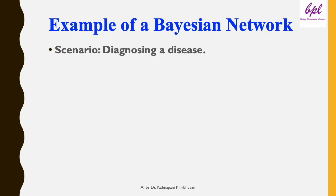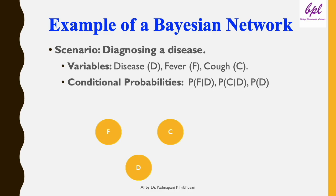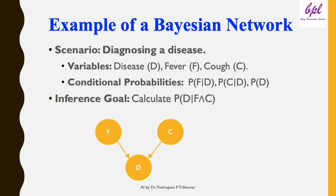Here is an example of a Bayesian network for disease diagnosis. Suppose we have three variables: disease D, fever F, and cough C — represented as nodes in the network. The disease variable D influences the symptoms fever F and cough C. We use edges to represent dependencies, with conditional probabilities P(F|D), P(C|D), and P(D). Using this network, we can compute P(D|F,C), determining the likelihood of a disease given observed symptoms.